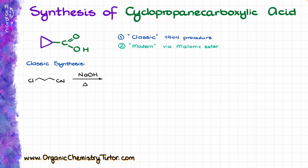The first thing that happens in this reaction is acid-base chemistry between our sodium hydroxide and the hydrogens in the alpha position to our nitrile. The hydroxide comes in and pulls one of those protons off, giving me the following enolate-like structure, which can be stabilized by resonance — that's the whole point of why it forms in the first place. Our resonance structure looks like this.